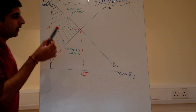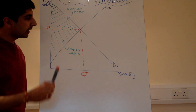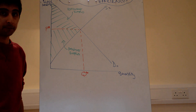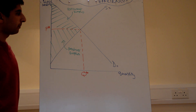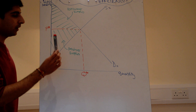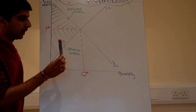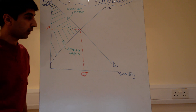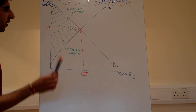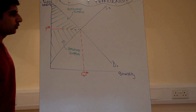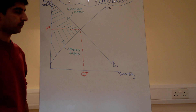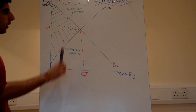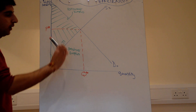I've drawn here a simple demand and supply diagram where the equilibrium market price is at P star and the quantity is at Q star. I've also drawn there consumer and producer surplus. We all know what those are and how to label those.